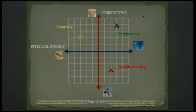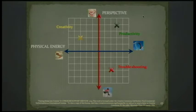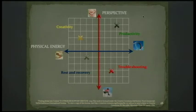The bottom right quadrant is the troubleshooting phase. I can see that something could be going wrong and the emotions I'm feeling are letting me know that I need to do something about it before things go completely pear-shaped. Those feelings are actually giving me information — I've got to make some changes, and the energy is there to do them. This final bottom left quadrant is a rest and recovery phase. I'm feeling flat, I've used up my energy and I really need to take care of that. If I ignore it for too long, my perspective could slide down even further.